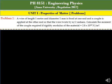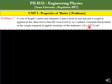Problem number 1: A wire of length 1 meter and diameter 1 mm is fixed at one end, and a couple is applied at the other end so that the wire twists by π/2 radians. Calculate the moment of couple required if the rigidity modulus of the material is 12.8 × 10¹⁰ Newton per meter squared.